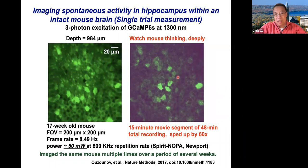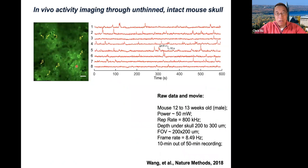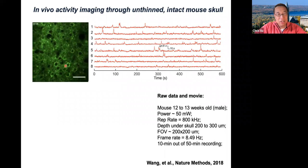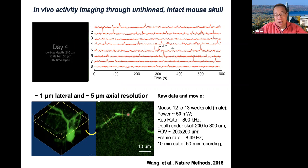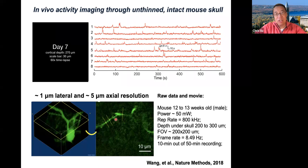We can also now capture neuronal activity. You can see the blinking of those neurons indicating neurons firing action potentials. We can also image through unthinned and intact mouse skull — we don't have to remove the bone and put a glass window. We peel away the skin but leave the bone completely intact. You can see a movie showing neuronal activity through the unthinned and intact skull, with GCaMP-labeled neurons firing action potentials. We can watch this over multiple days and weeks. The lateral resolution is about one micron and the axial resolution is about five microns — fine enough to see a single neuron through an unthinned and intact mouse skull.